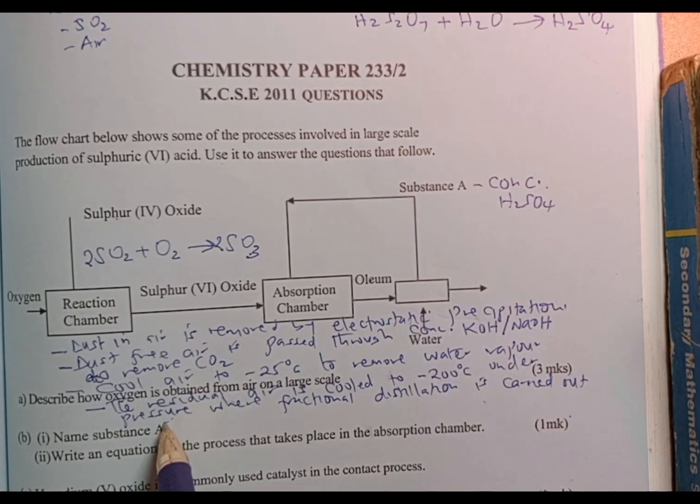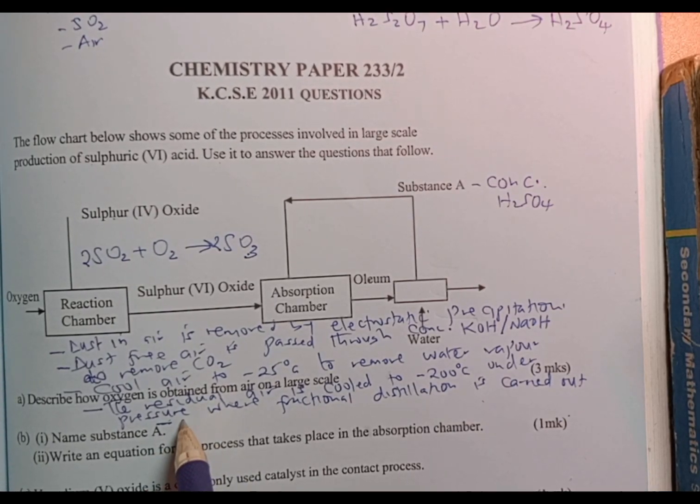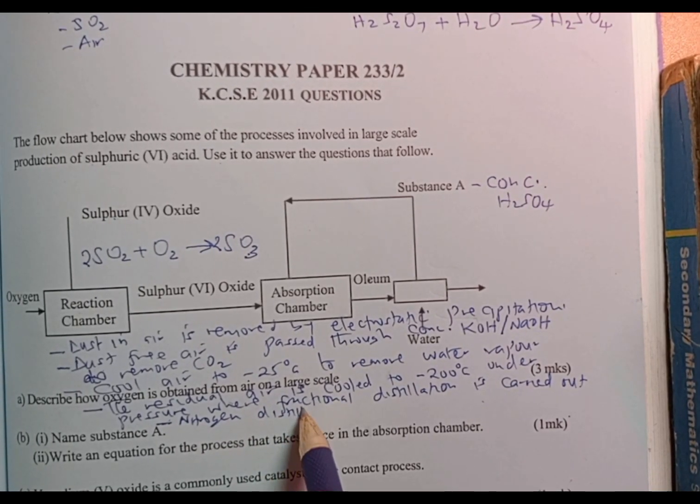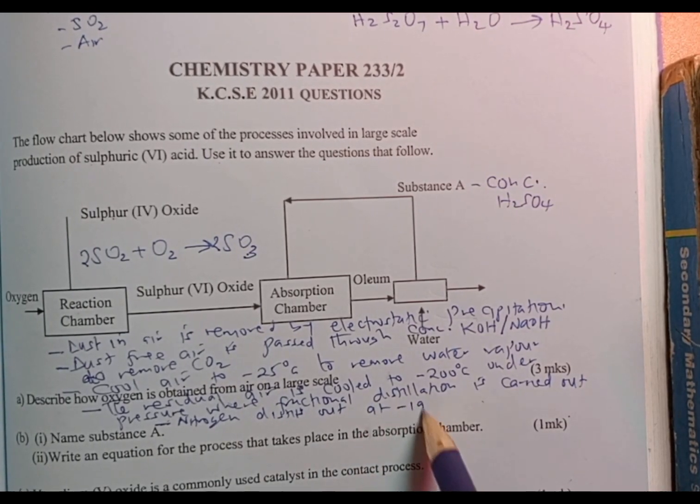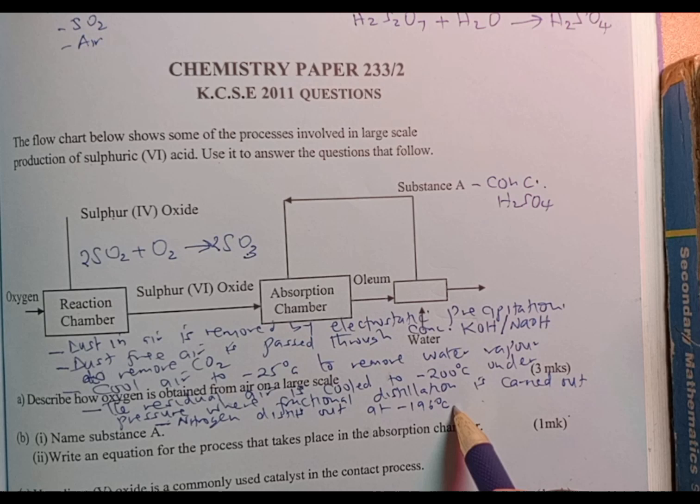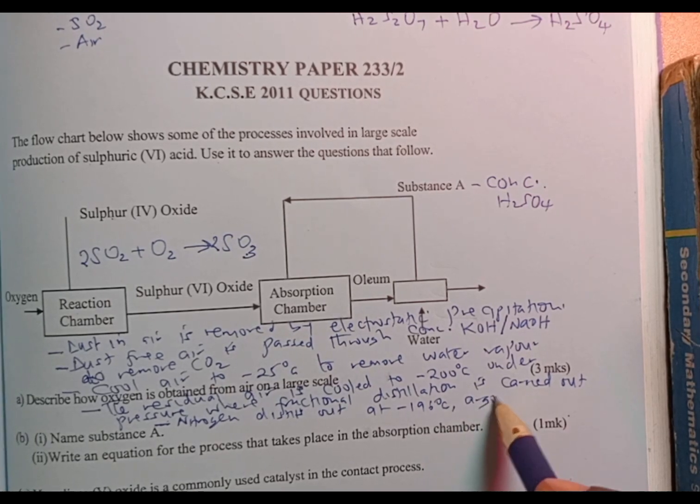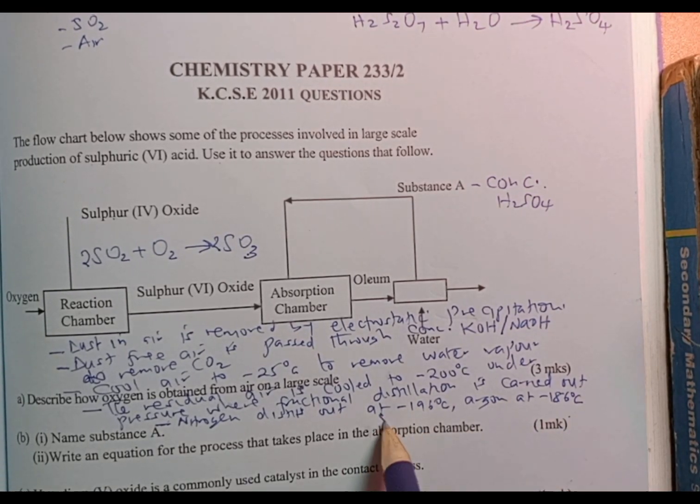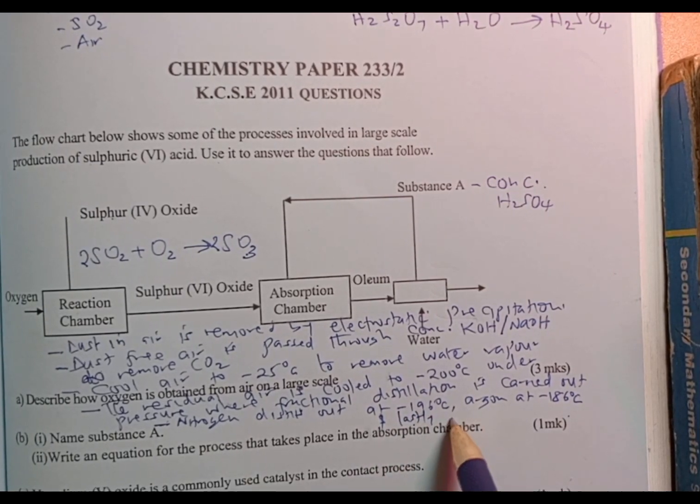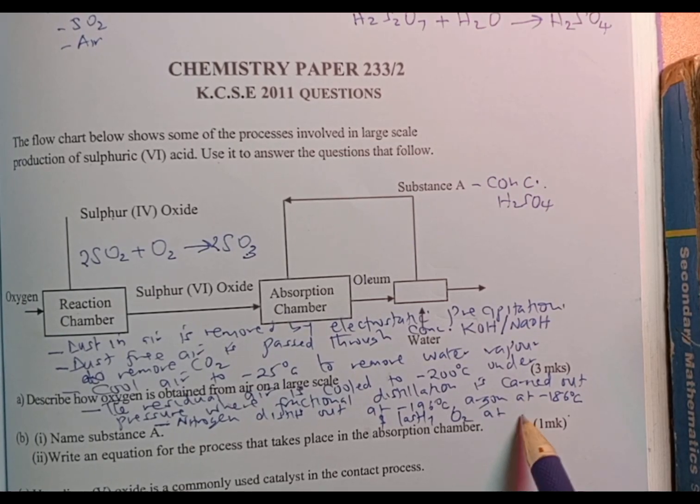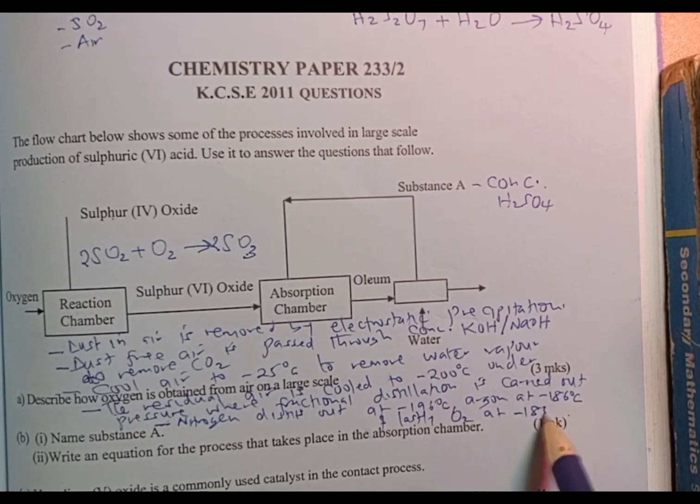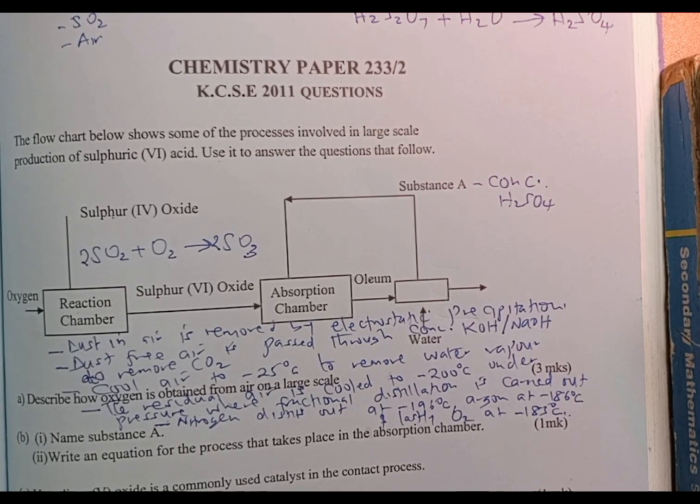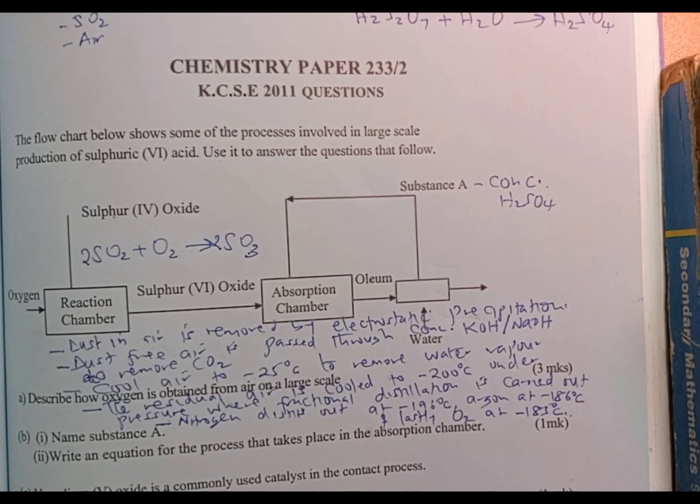Then from there, we know that nitrogen, having the lowest boiling point, distills out at negative 196 degrees Celsius, followed by argon at negative 186 degrees Celsius. And lastly, oxygen comes out at a temperature of negative 183 degrees Celsius. That is how oxygen gas is obtained from air through fractional distillation of liquid air.